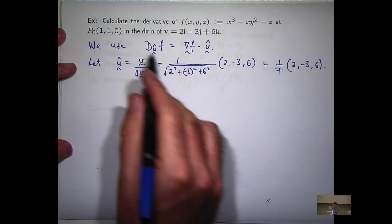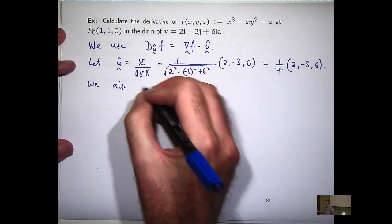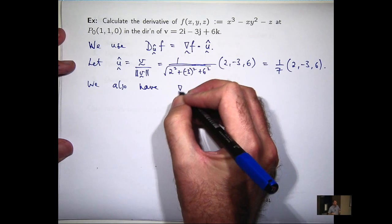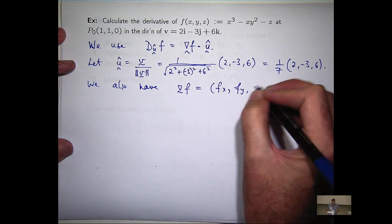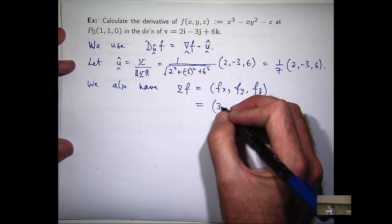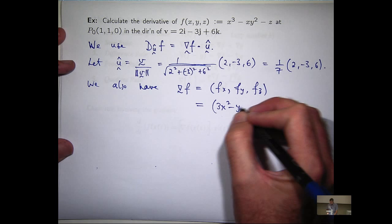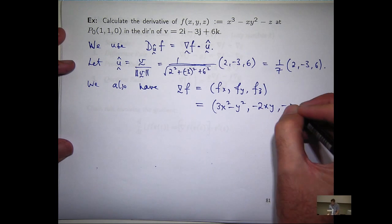Anyway, let's calculate the gradient, grad f. So it's just partials. So we're going to get 3x squared minus y squared minus 2xy and minus 1.